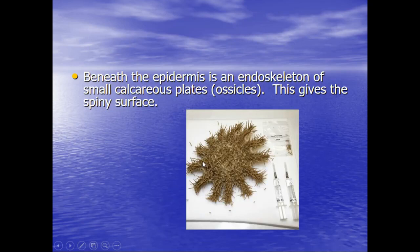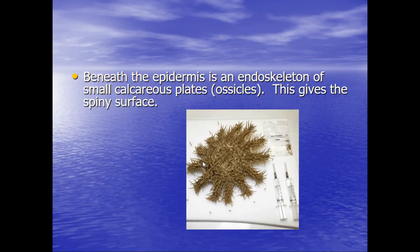Beneath the epidermis is an endoskeleton of small calcareous plates known as ossicles. This gives the sea star a spiny surface, which is how it got its name — Echinodermata means spiny skin. Here we can see all of the tissue of this sun star has been removed, and all that's left over are the calcareous ossicles or plates. That is the basic endoskeleton of that creature.